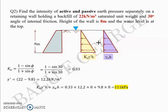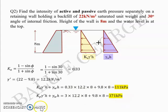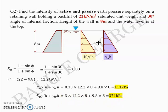Substituting: Ka·γ'·H + γ_w·H = 0.33 × 12.2 × 8 + 9.8 × 8 ≈ 111 kPa for the active case. For the passive case, replace Ka with Kp = 1/Ka = (1 + sin φ)/(1 − sin φ) = 3, giving approximately 371 kPa.